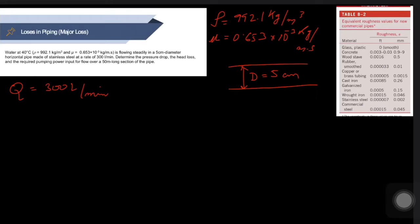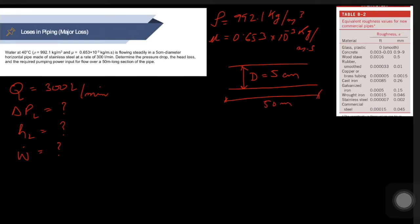We need to determine: the pressure drop ΔP, the head loss h_L in terms of height, and the required pumping power — all over a 50-meter-long section of the pipe.